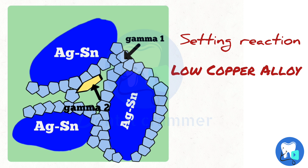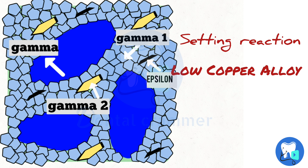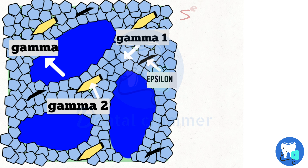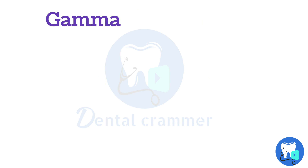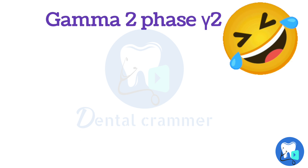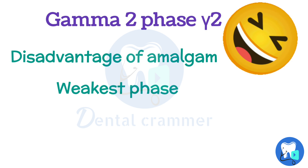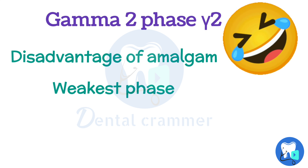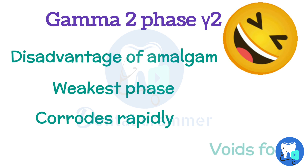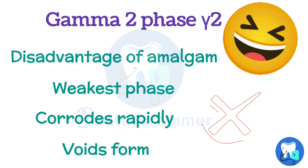The yellow in the animation is the gamma 2 phase. In the final set matrix of the low copper alloy, we have the unreacted silver tin alloy which is the gamma phase, and gamma 1 acting as the filler in the matrix. The gamma 2 phase is the main disadvantage of amalgam — it is the weakest of all phases, corrodes rapidly, and due to corrosion, voids are formed.